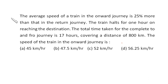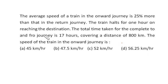Let's try this question. The average speed of a train in the onward journey is 25% more than the return journey. The train halts for an hour on reaching its destination. The total time taken for the complete to and fro journey is 17 hours and the distance is 800 km. We have to find out the speed of the train in the onward journey.